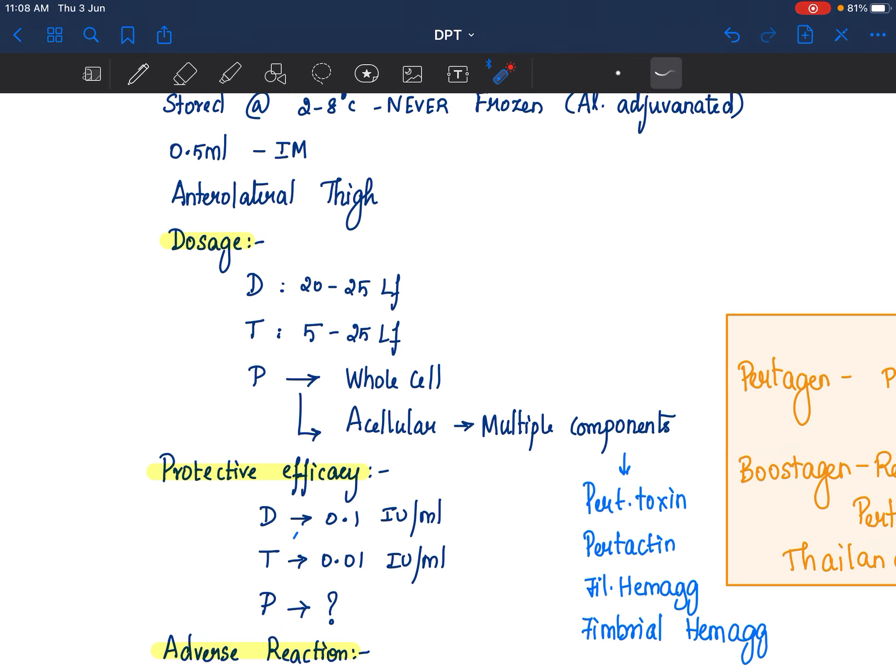Again in acellular, there are different vaccines which have multiple components. Some are made of 3 pertussis antigen components. Some are made of 5 pertussis components.